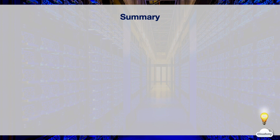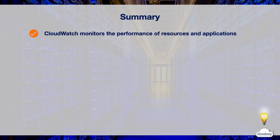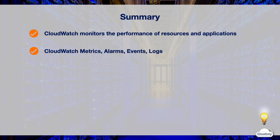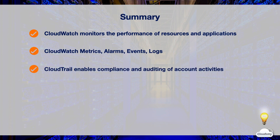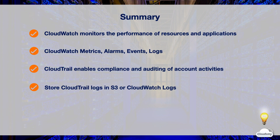In this episode we've learned about AWS monitoring services CloudWatch and CloudTrail. CloudWatch is a monitoring service that helps you collect performance data of your resources and applications on AWS. You can use CloudWatch Metrics to monitor resource performance and create alarms. CloudWatch Events can respond to system changes and schedule automated tasks. CloudWatch Logs centralizes all system logs. CloudTrail is an auditing service enabling compliance and auditing of account activities, integrated with S3 and CloudWatch.